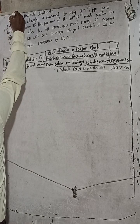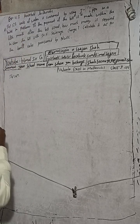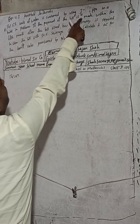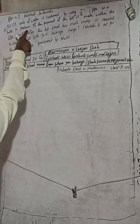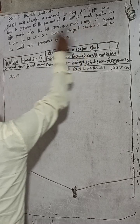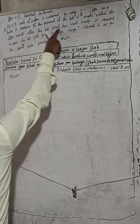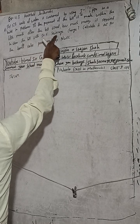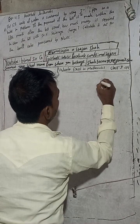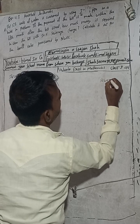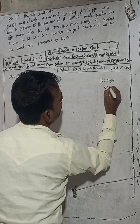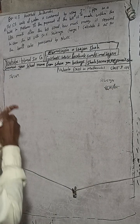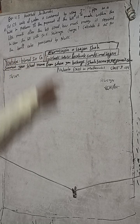Here the question is: 127 units of water is consumed by using a three-by-four inch pipe in a hotel in Pokhara. If the payment of the bill is made within the fifth month after the bill is issued, how much money is required to clear the bill with 50% sewerage charge? Calculate it as per the tariff rates provision by NWSC.